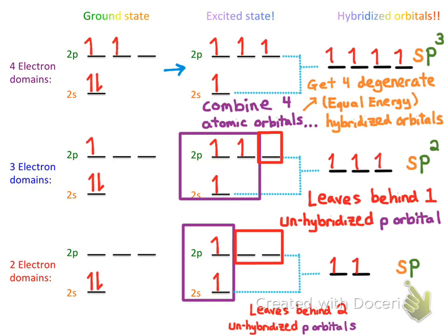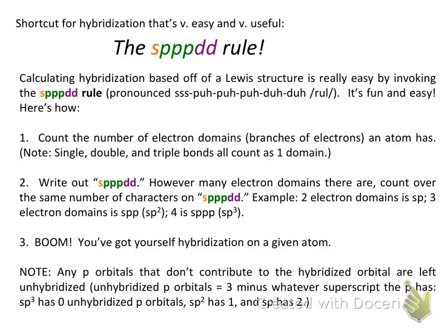So that's the general idea behind hybridization. Now let's look at a really easy, and fun, way of assigning hybridization to a given atom — presenting the sp-p-p-p-da-da-da rule. The sp-p-p-p-da-da-da rule is a powerful, useful, and fun way of assigning hybridization to atoms.